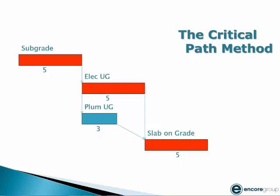This is an example of a sequence of activities where a critical path is identifiable. You can see in this example the sequence from subgrade through the electrical and plumbing underground and the slab on grade. The red items are obviously critical, and you can see the plumber has two days of float. Understanding the float and who owns the float is one of the most important parts of a construction scheduling task.